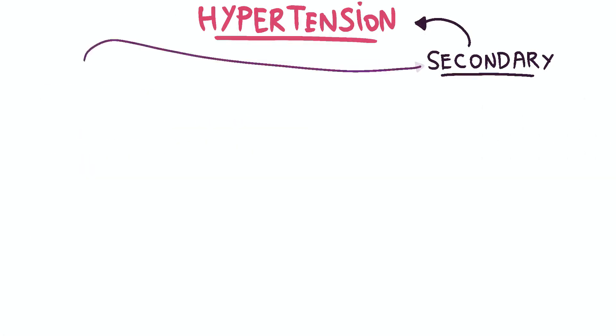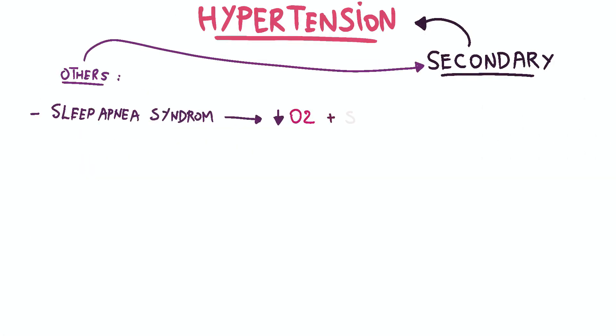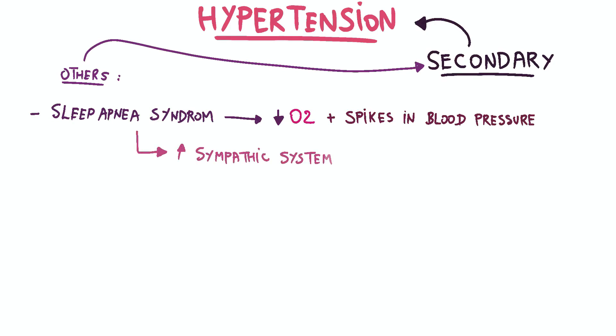Sleep apnea syndrome can cause repeated episodes of low oxygen levels and contribute to blood pressure spikes due to increased sympathetic nervous system activity.